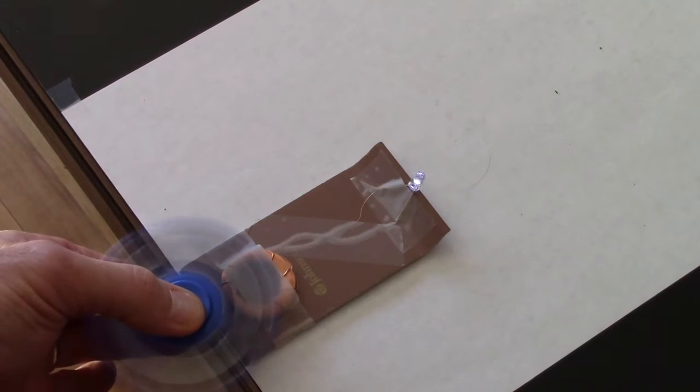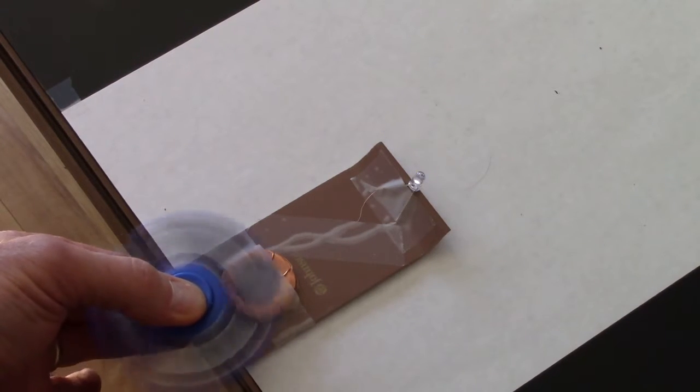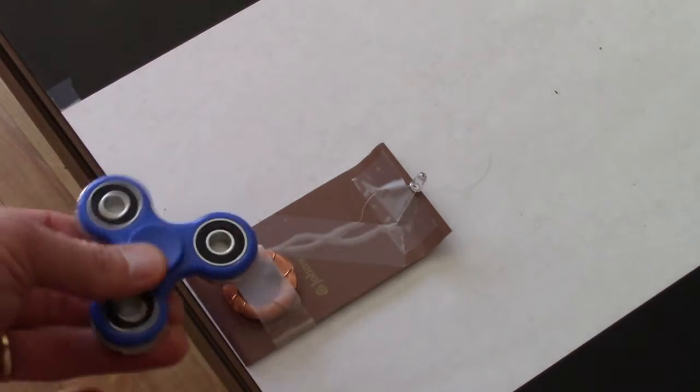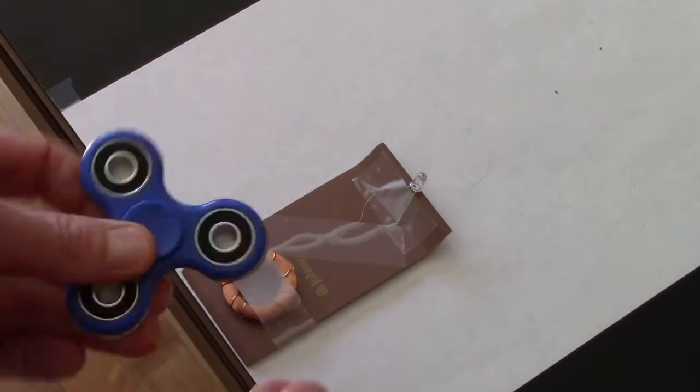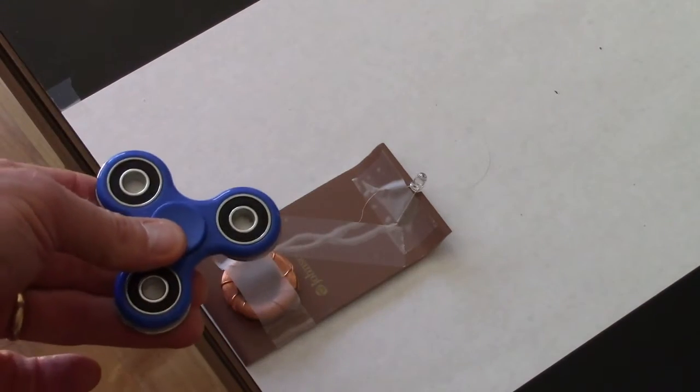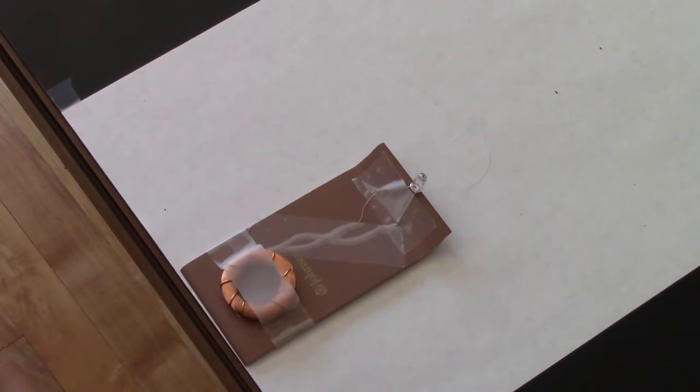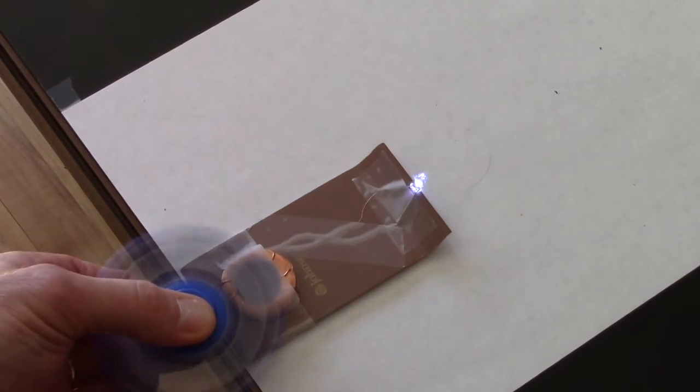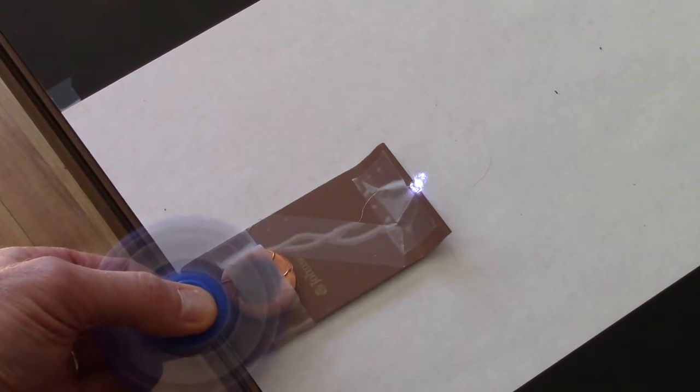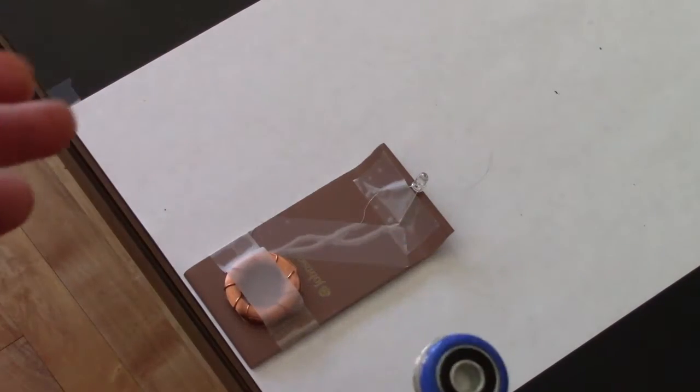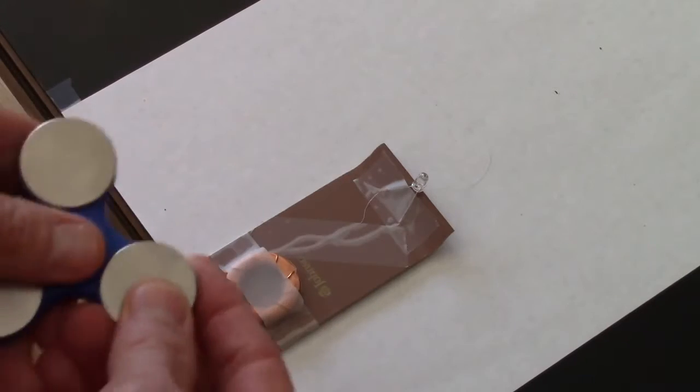What we hope they take with them is they know that the fidget spinner magnets make the light light. When the magnets aren't spinning, there's no noticeable attraction. When they're spinning, if I hold it further away there's no light. There needs to be more light when I get close.